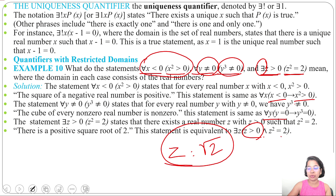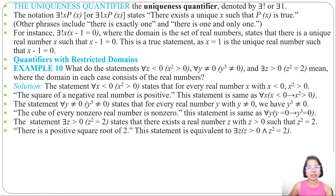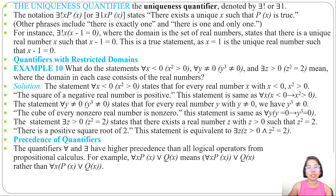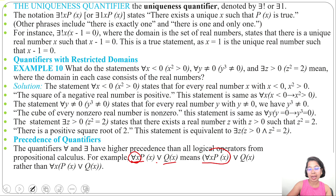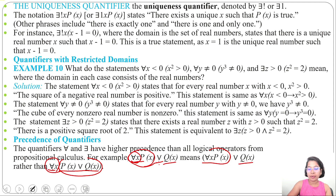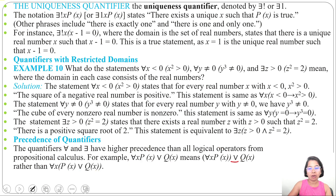Next is precedence of quantifiers. Universal and existential quantifiers have higher precedence than logical operators in propositional calculus. For example, ∀x P(x) ∨ Q(x) means first evaluate ∀x P(x), then OR with Q(x). It is not the same as ∀x (P(x) ∨ Q(x)), where the disjunction is evaluated first inside the quantifier scope. So universal and existential quantifiers have higher precedence over all logical operators.